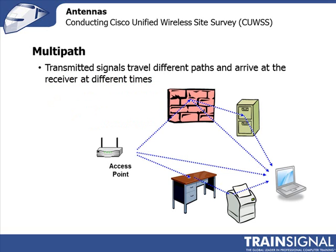Yes, they do interfere with each other, but I'm able to unscramble the received signal and get back to what the signal was on those different antennas. The reason I can do that is that when your signals leave your different antennas, those signals follow very different paths — what we refer to as multipath. MIMO works best when you have a lot of multipath, which is formed where signals leave one antenna and bounce off obstacles such as walls, filing cabinets, or even your body.